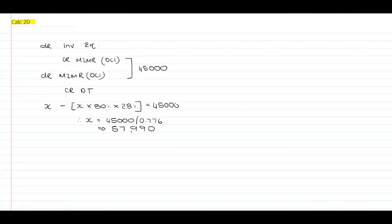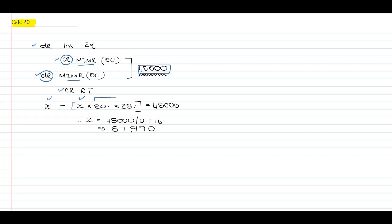I've included calculation 20. Think about your journal entries. To be able to get to the $45,000, which would transfer from our mark-to-market reserve to retained earnings, they will have to debit the investment, credit mark-to-market reserve, debit mark-to-market reserve, and credit deferred tax. Therefore, the net effect of the credit and debit in terms of the mark-to-market reserve is the $45,000. To obtain the amount before tax, you will have to use X minus X times tax, and this will be your $45,000. Therefore, the $45,000 divided by 0.776 gives $57,990.